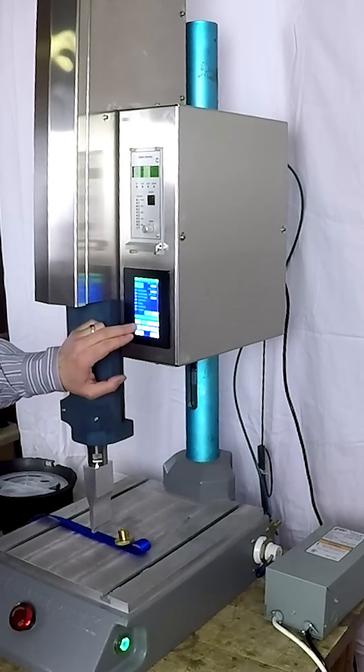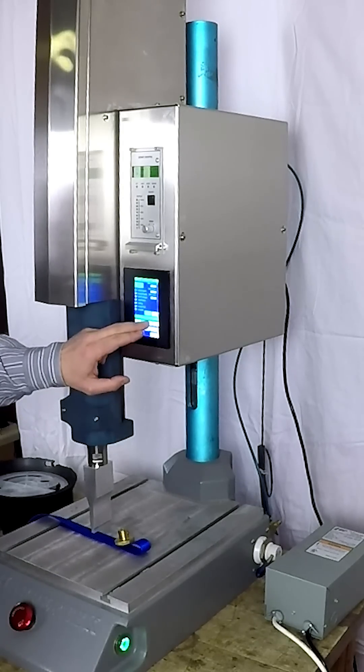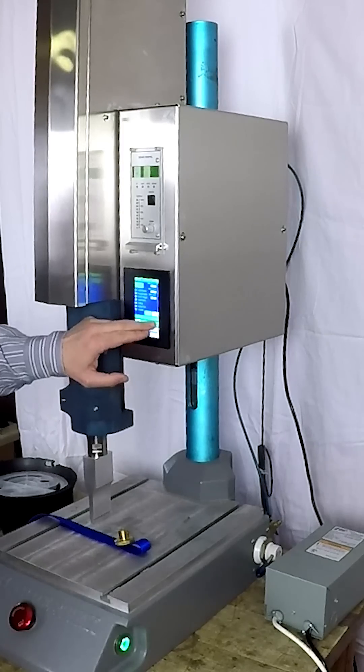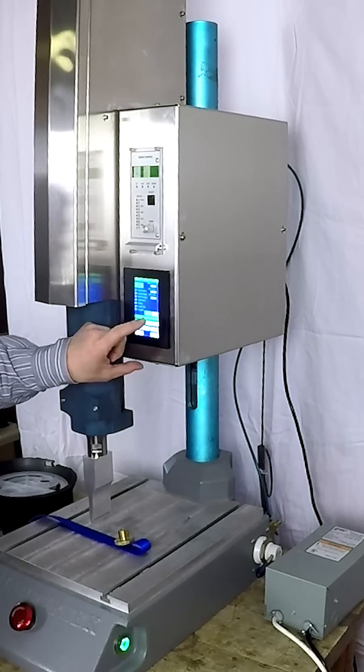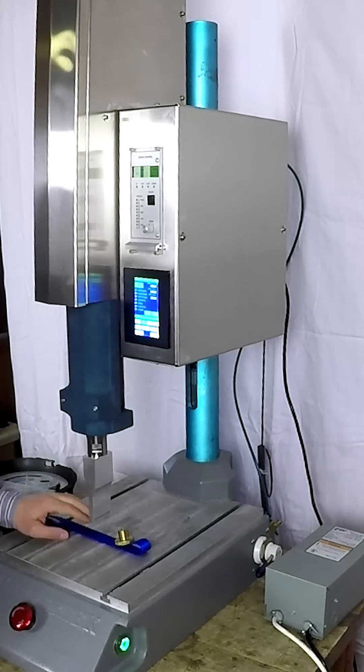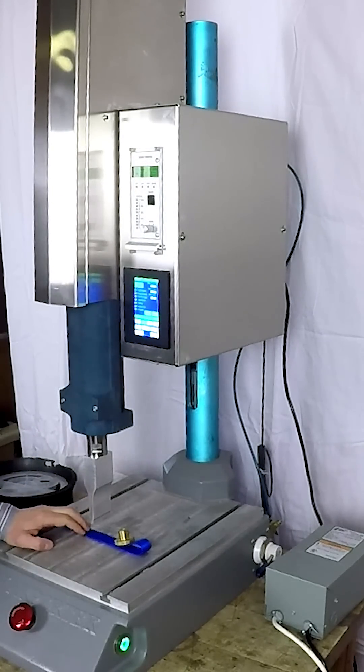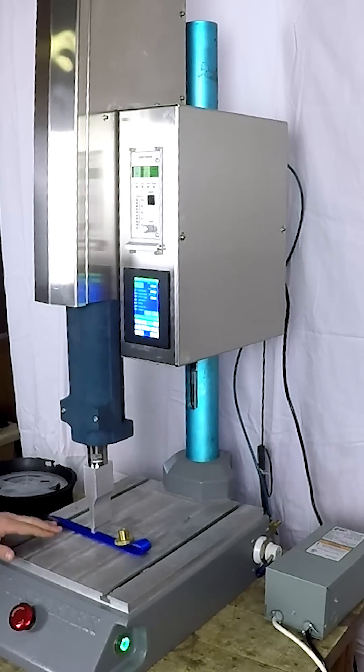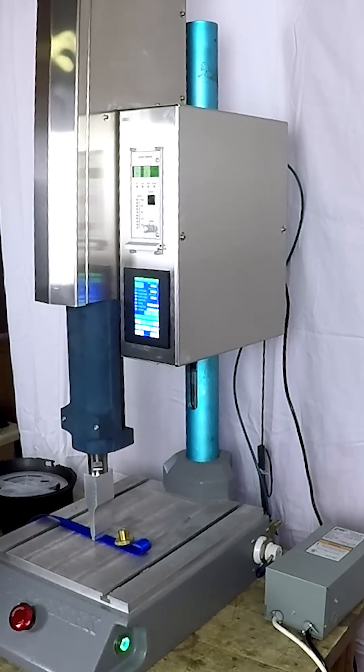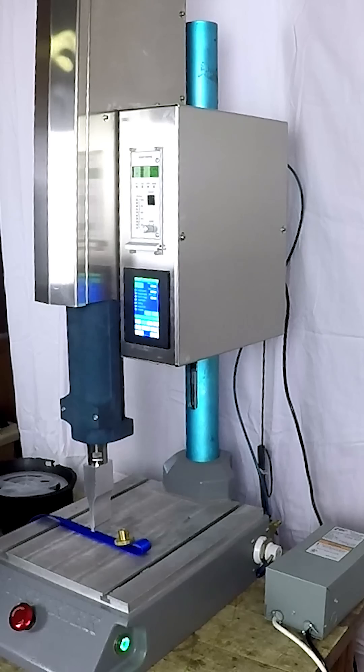So first we set our start distance. Let's say we want to start from this point and then we do automatic part sensing. So the head is going to automatically sense where the part is and after sensing where the part is, we can set the melt distance.